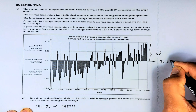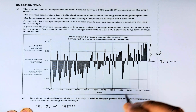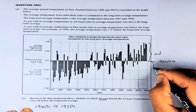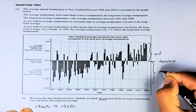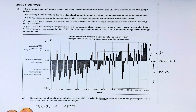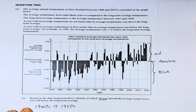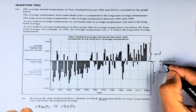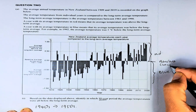Anything above the baseline is above the temperature, and anything below the baseline will be in blue — those are below the baseline, meaning the temperature has gone down. A year with the average temperature in blue means the average temperature was below the long-term average. The baseline is also called the long-term average.